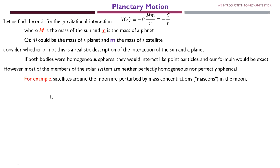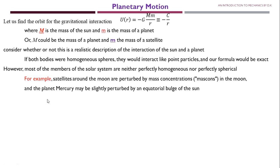For example, satellites around the Moon are perturbed by mass concentrations in the Moon. In the case of the Moon, there is a change in mass concentration, so when satellites are moving around the Moon there may be some perturbation in the path of their orbit. Similarly, in the case of Mercury, the planet may be slightly perturbed by an equatorial bulge of the Sun. So this may be a difficult situation where we will not be able to apply our equations smoothly.